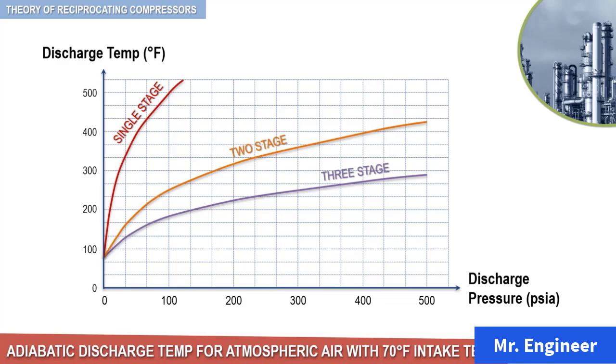From this figure, and for a discharge pressure of let's say 100 PSI, you can see that a single-stage compressor will raise the temperature of air to 500 degrees Fahrenheit, while a two-stage compressor to 250 degrees Fahrenheit, and a three-stage compressor to 180 degrees Fahrenheit. This shows the importance of multi-staging in limiting the gas discharge temperature.